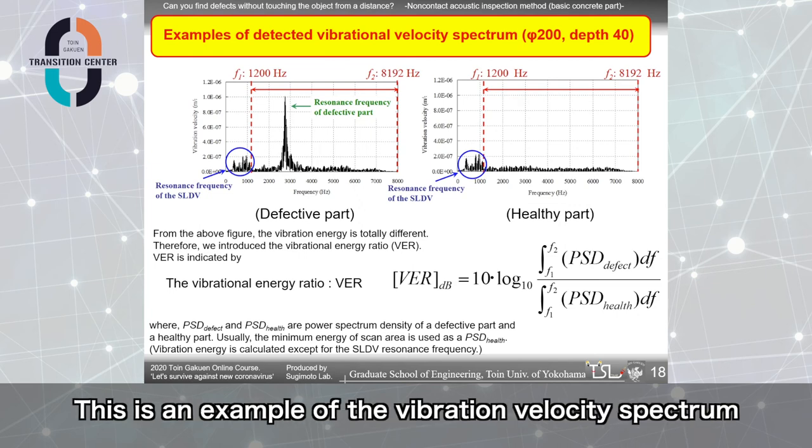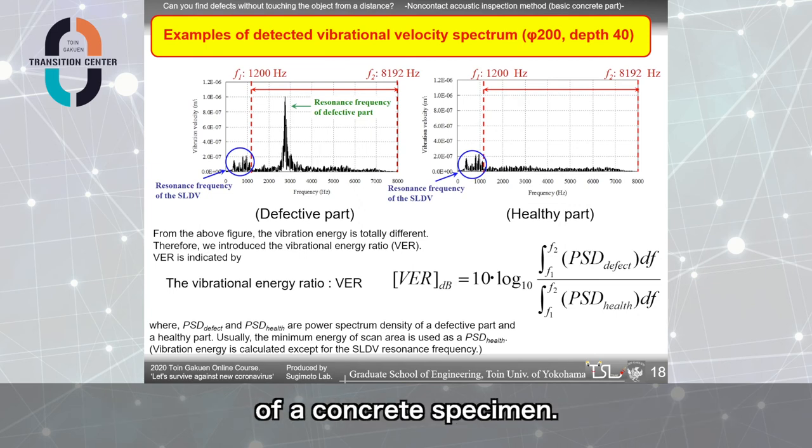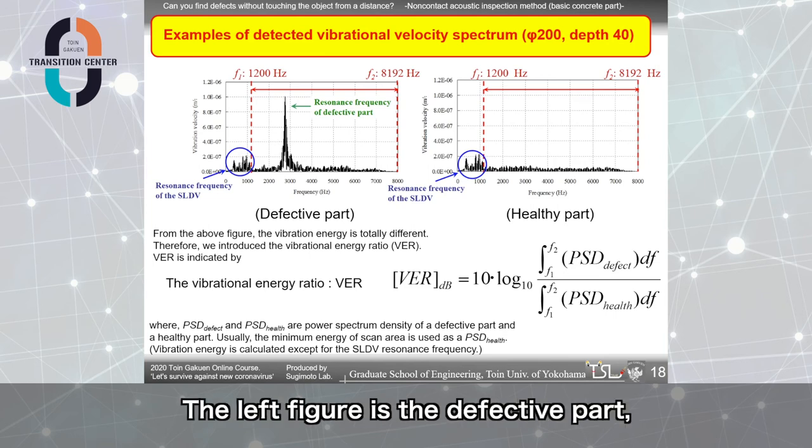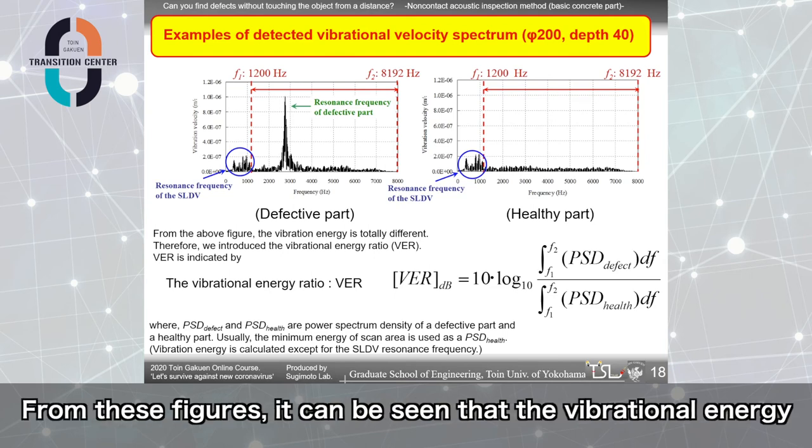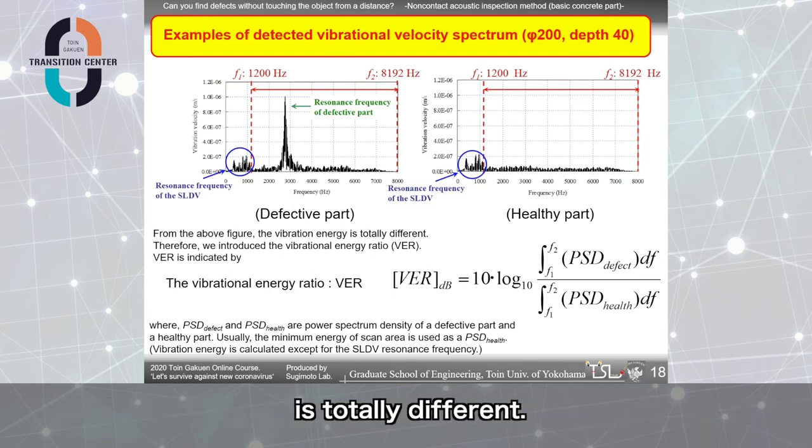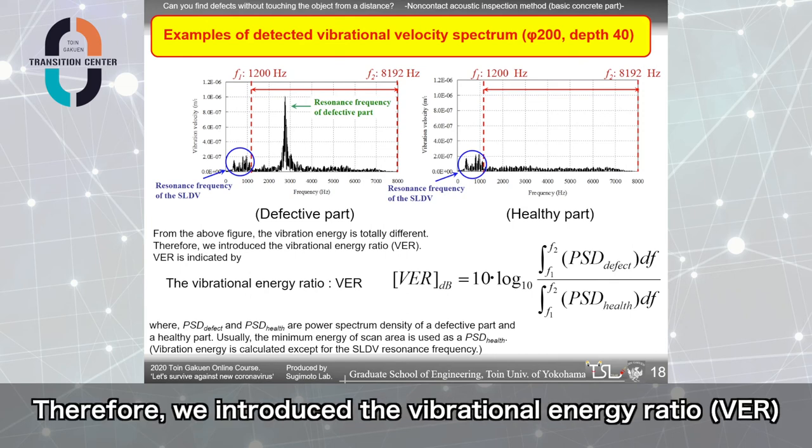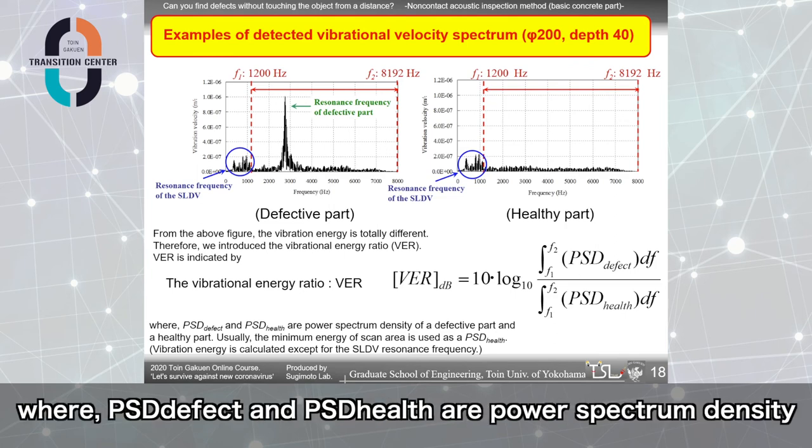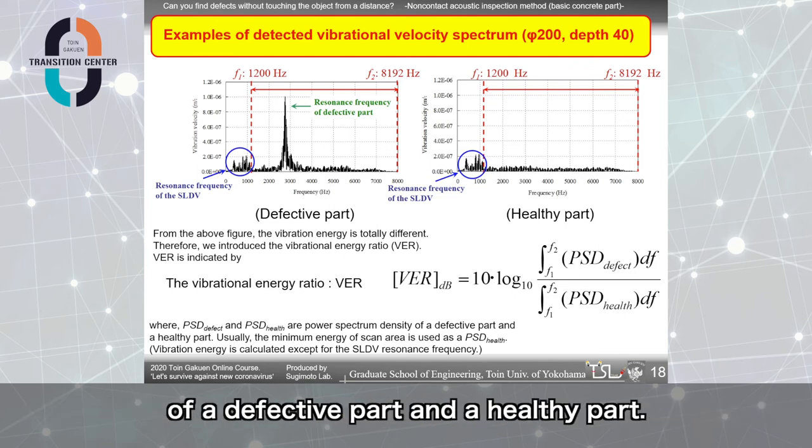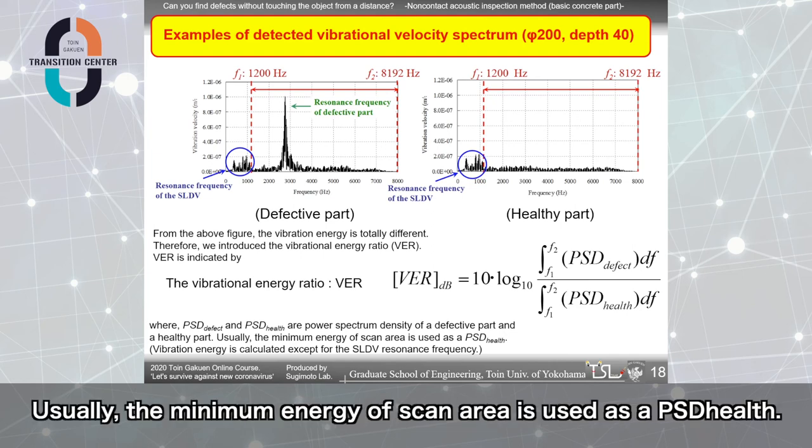This is an example of the vibration velocity spectrum of a concrete specimen. The left figure is the defective part, and the right figure is the healthy part. From these figures, it can be seen that the vibration energy is totally different. Therefore, we introduce the vibration energy ratio like this formula. Where, PSD_defect and PSD_health are power spectrum density of a defective part and a healthy part. Usually, the minimum energy of the scan area is used as PSD_health.